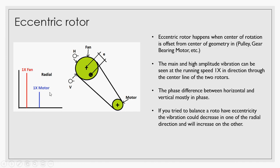Please notice you have two speeds at this condition: you have the 1X of the fan and 1X of the motor, and the 1X will be high in the radial direction. If you try to balance a rotor that has eccentricity, the vibration could decrease in one of the radial directions and will increase on the other.